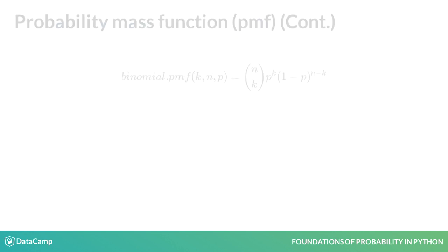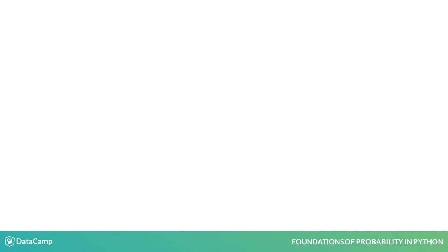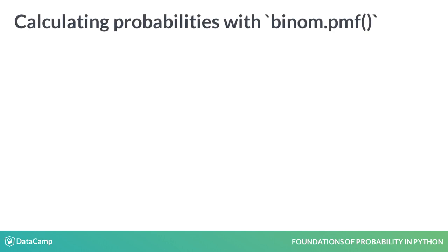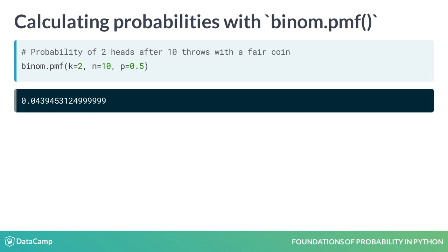With the scipy.stats library, we can use the binom.pmf function to calculate this probability. If you use binom.pmf with parameters k equals 2, n equals 10, and p equals 0.5,